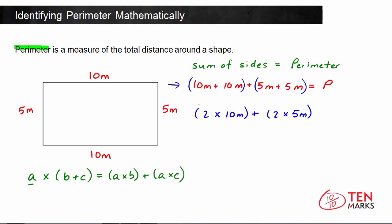As we can see here, we have 2 multiplied by two different numbers, 10 and 5, and they're being added. So you can rewrite this using the distributive property as 2 times 10 meters plus 5 meters. 2 times 10 plus 5 is 15. So 2 times 15 meters equals 30 meters.